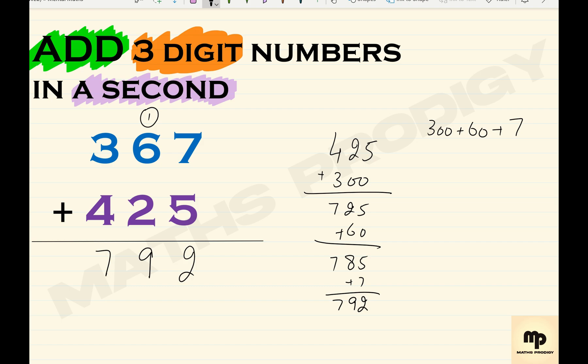I'll repeat: 425, you have to add 367. Keep 425 in your mind. 425 plus 300, you know only the hundreds place will change, so that will be 725. Then for the tens, add 60, that will be 785. And then at last, it's only 7, so that is 792.